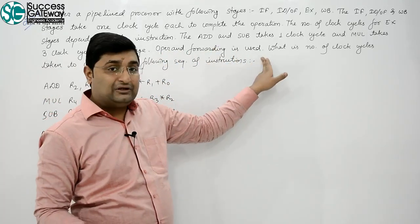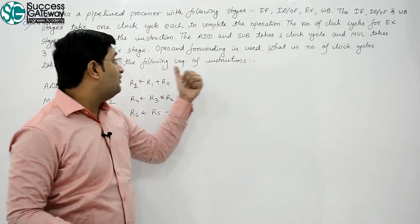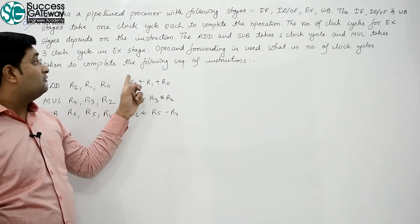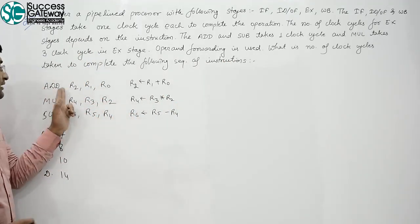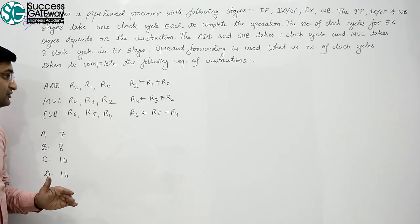Operand forwarding is used. What is the number of clock cycles taken to complete the following sequence of instructions? ADD R2, R1, R0. These are the instructions.